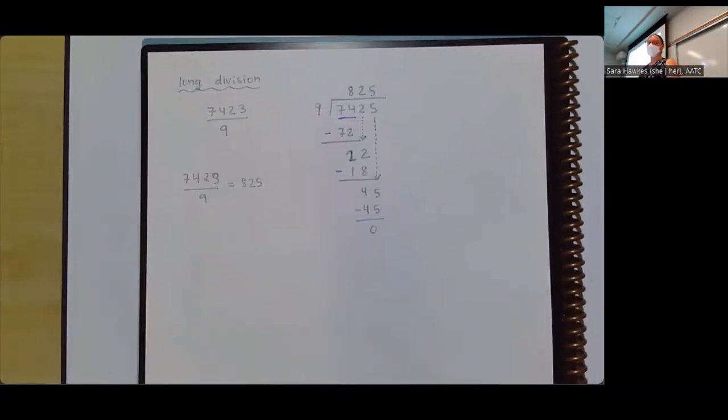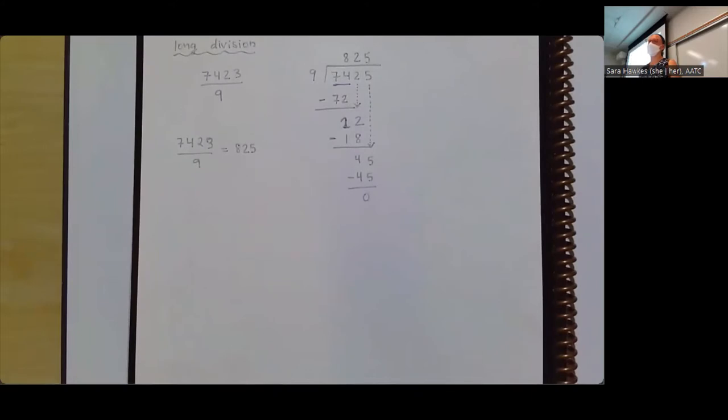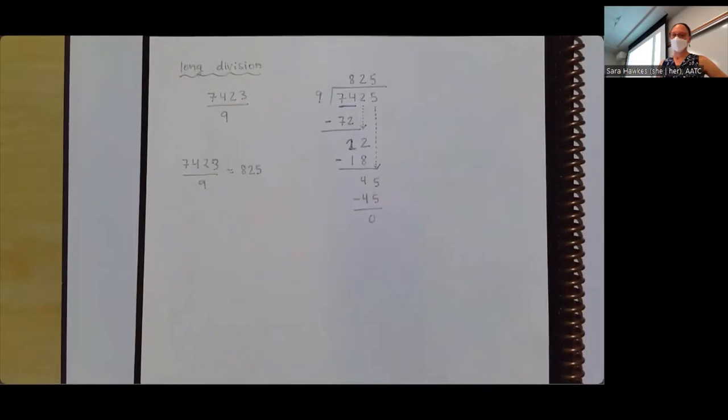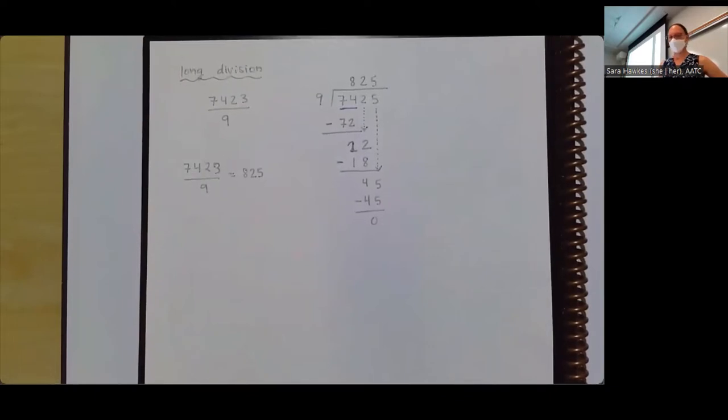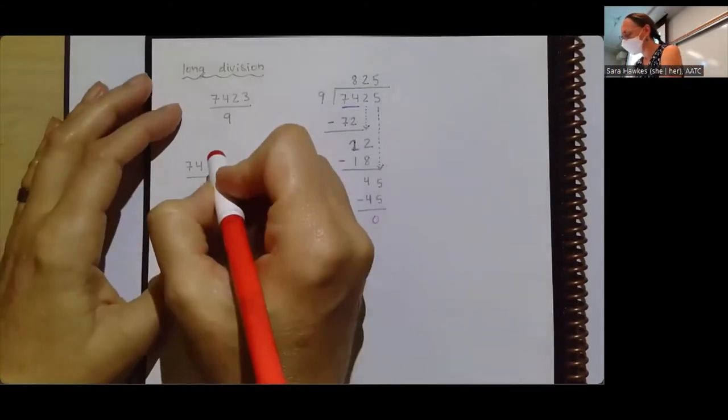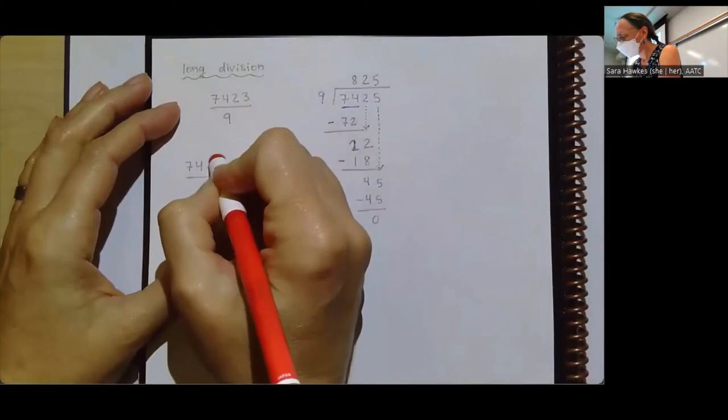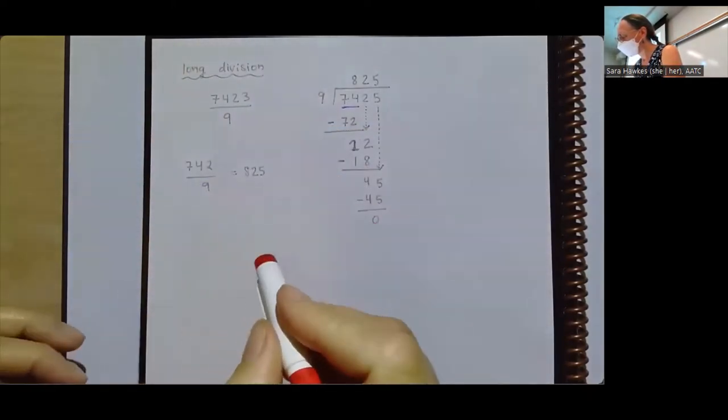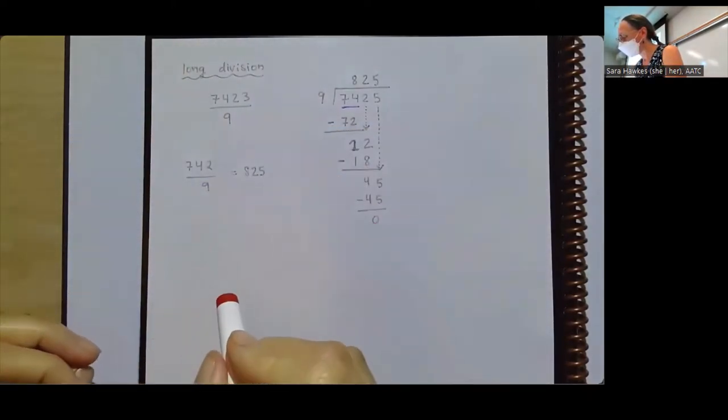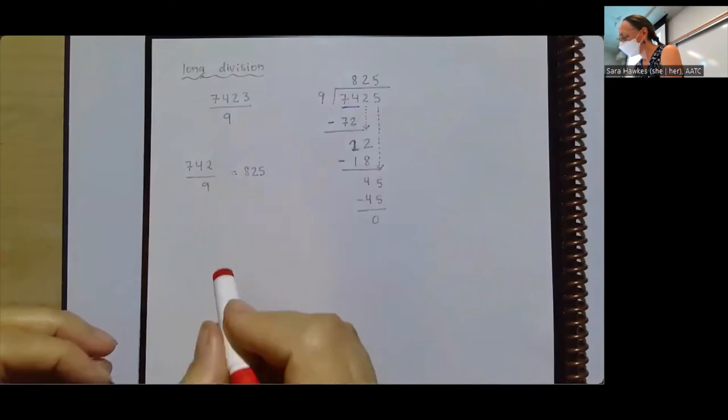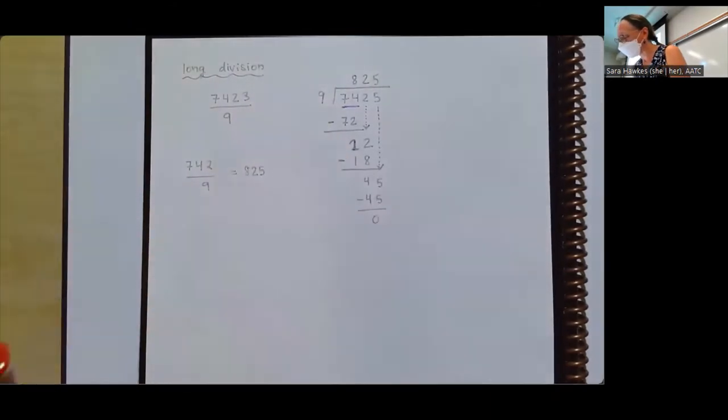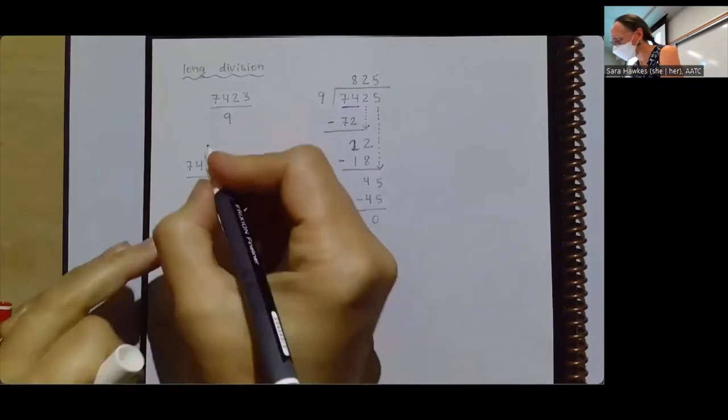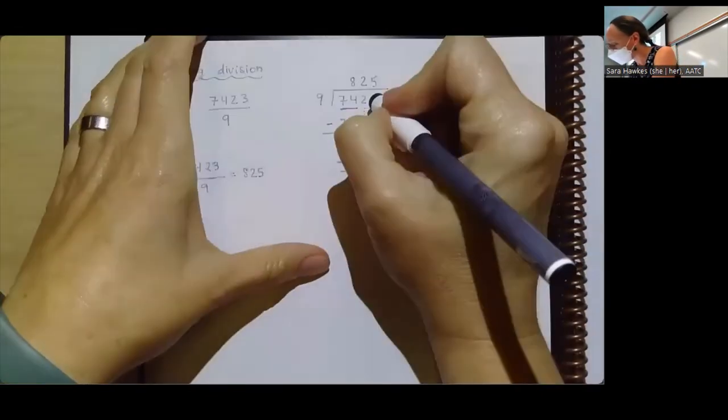What that means is that 7,423 divided by nine is equal to 825. I'm going to do one more example that won't work out quite so nicely. Yeah, you divided 7,425. Sorry. Oh, I switched the numbers. Cool, I did switch the numbers. Tell you what, trying to decide how to fix it. I'm going to fix it like this. We got this. I'm going to switch that back.